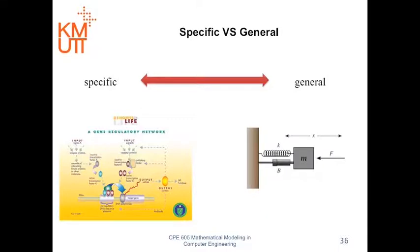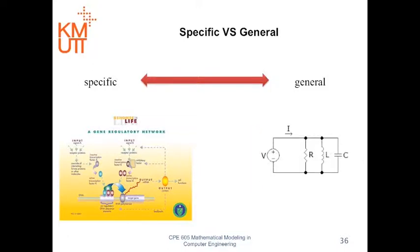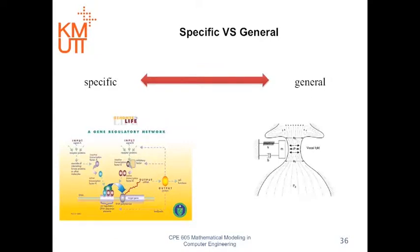On the other hand, a general model uses a general mathematical description to describe the model. And it has a number of analogies in different fields. For example, the second-order mass spring damper model can be used to describe mechanical system, electrical system, or even a muscular system.